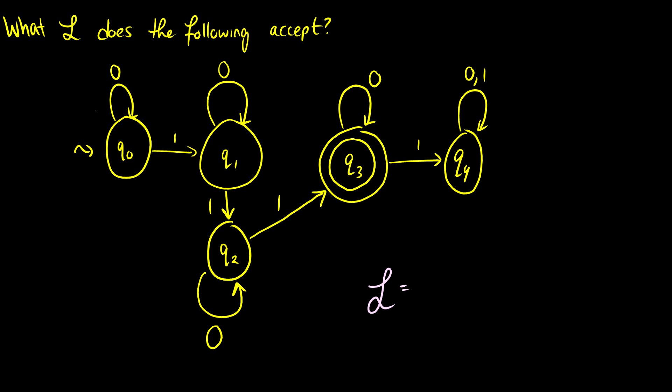In our first state, if we have a bunch of 0s, it stays in the state. So let's actually make a couple strings and go through it. So let's do a couple 0s and we're still in q0. We put a 1, we go to the next state. We put a couple more 0s and we put a 1 in, it goes to q2. We put a couple 0s in, we put a 1, it goes to q3, and we can put as many 0s as we want and it ends.